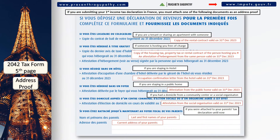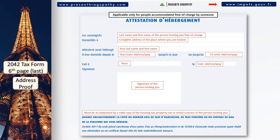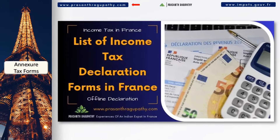Moving down to the fifth page of the 2042 tax form, you will see the various options to submit and address proof. However, this page is applicable only to the people who are submitting their first income tax declaration in France. The sixth and last page is applicable only for people accommodated free of charge by someone.